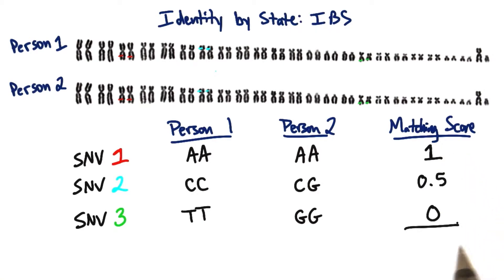Or we could look at multiple SNVs at once and take the average. The average here, we add 1 plus 0.5 plus 0 is 1.5 divided by 3 is 0.5.